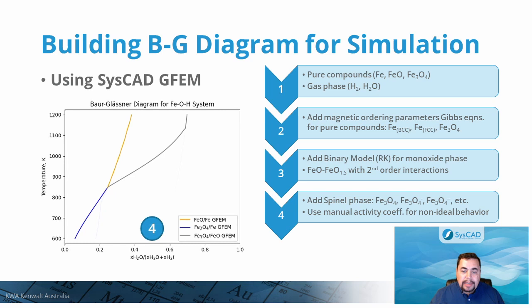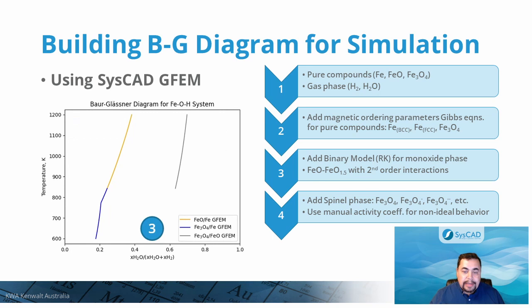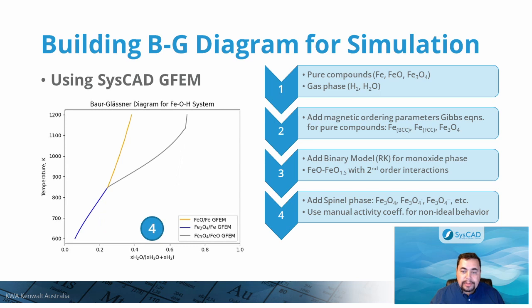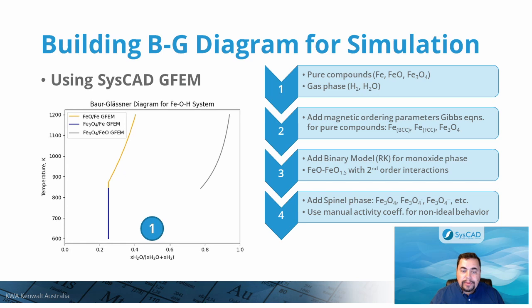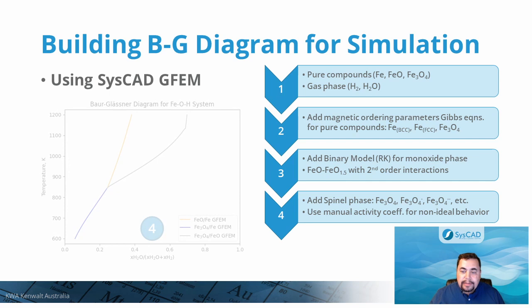Within this temperature range, iron is present as both BCC and FCC phases, with BCC having a strong magnetic ordering effect contributing to the Gibbs energy. These magnetic effects are also present in spinel or magnetite. Therefore, it was necessary to add this information to the CISCAT pure compound thermodynamic data, as reflected in diagram number 2 in this animation. Still, that was not enough to reproduce the diagram. It was recognized that iron oxide was actually present in the form of a monoxide solid solution, with two end-members to be considered. We included a binary model for this solution using the Redlich-Kister model.